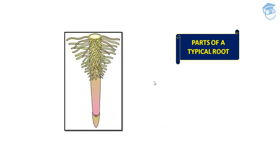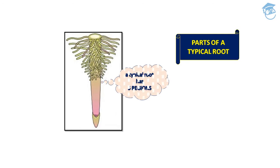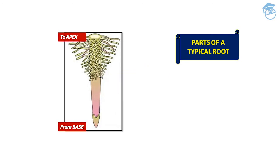Now let's see the parts of a typical root. A typical root has five regions from base to apex. The first region is the root cap. The apex of the root is covered by a thimble-like structure called the root cap, which protects the tender apex as it makes its way through the soil.